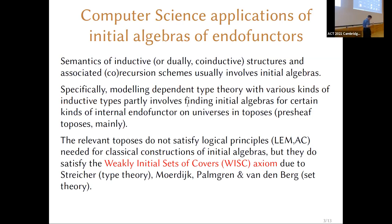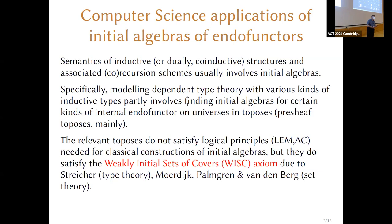Unfortunately, those toposes don't satisfy the usual principles of classical logic, so you can't just take usual classical constructions of initial algebras and replay them in those toposes, because toposes tend not to satisfy the law of excluded middle and they tend not to satisfy the axiom of choice. Therefore we're interested in proving theorems about the existence of initial algebras for functors in those kinds of toposes.